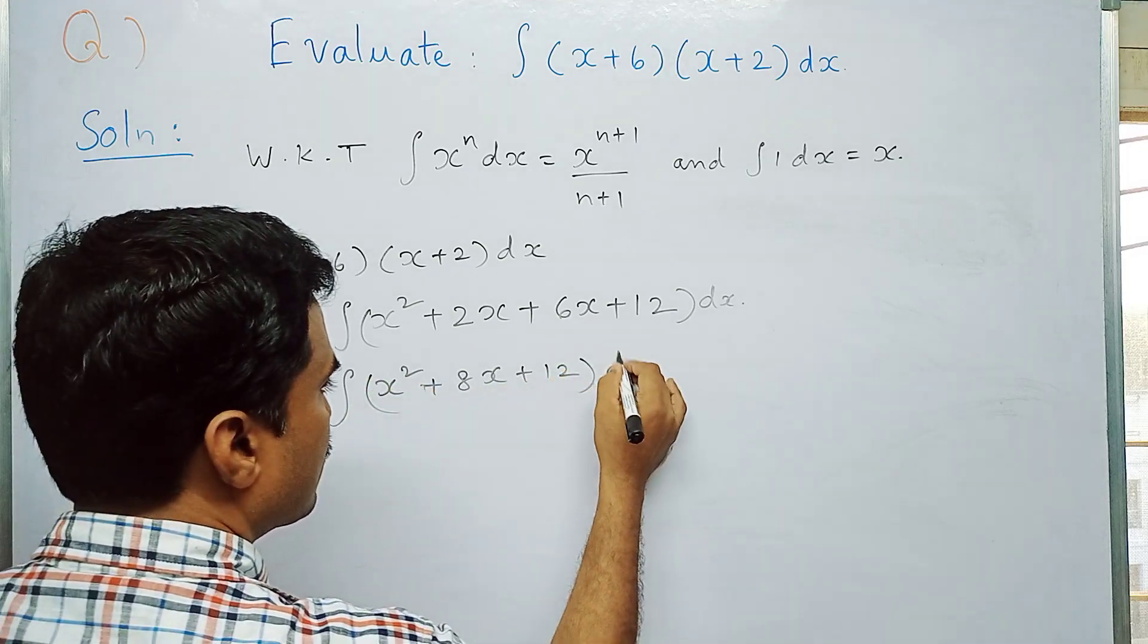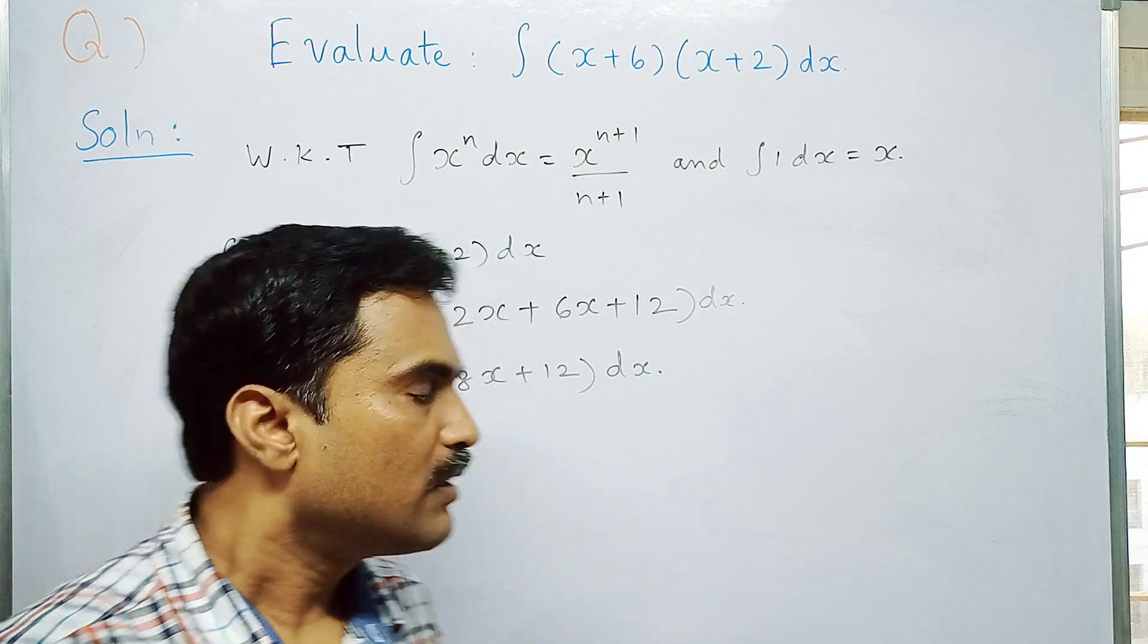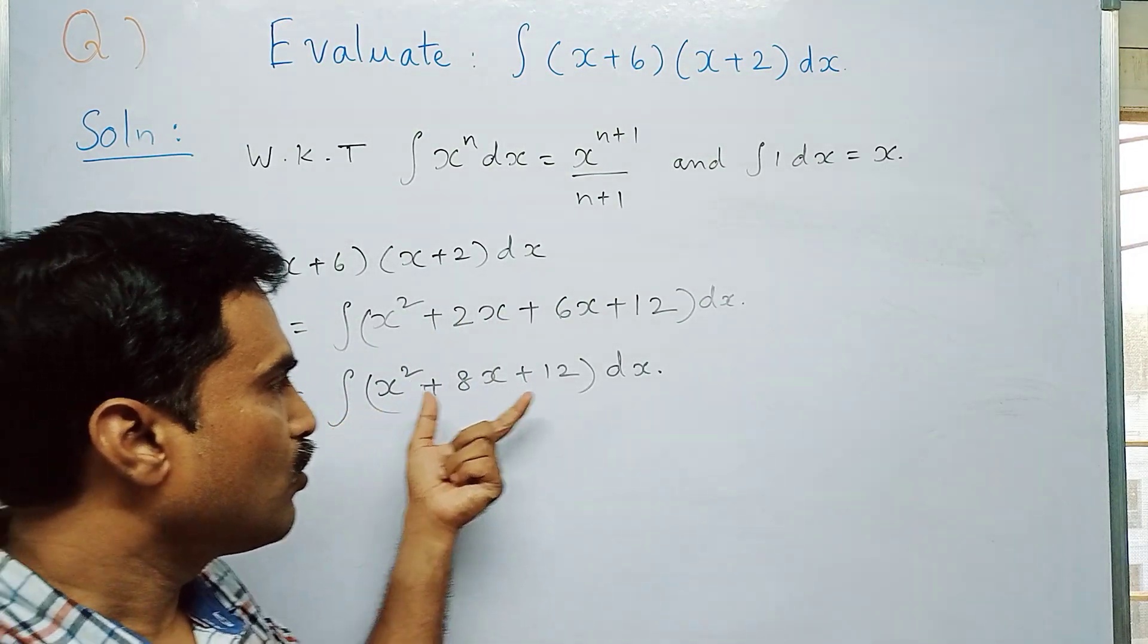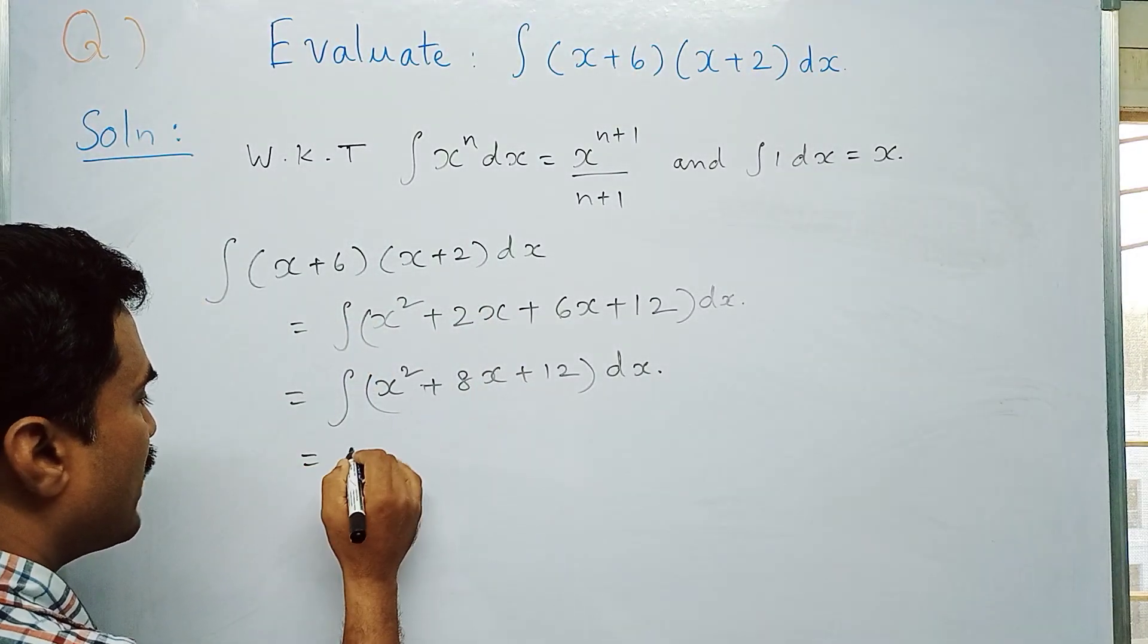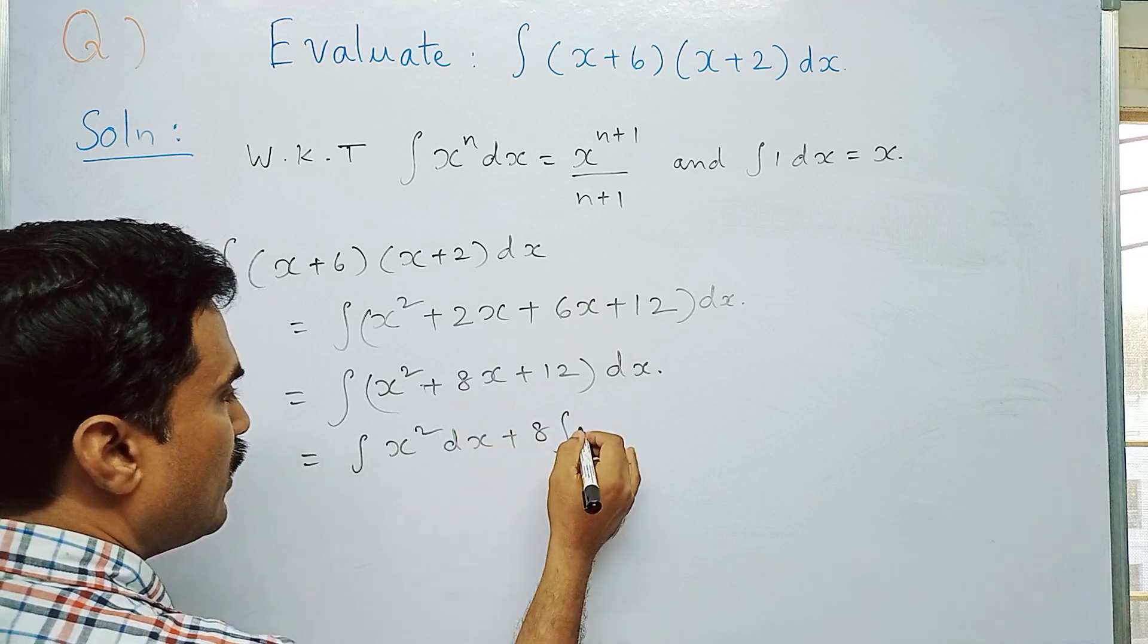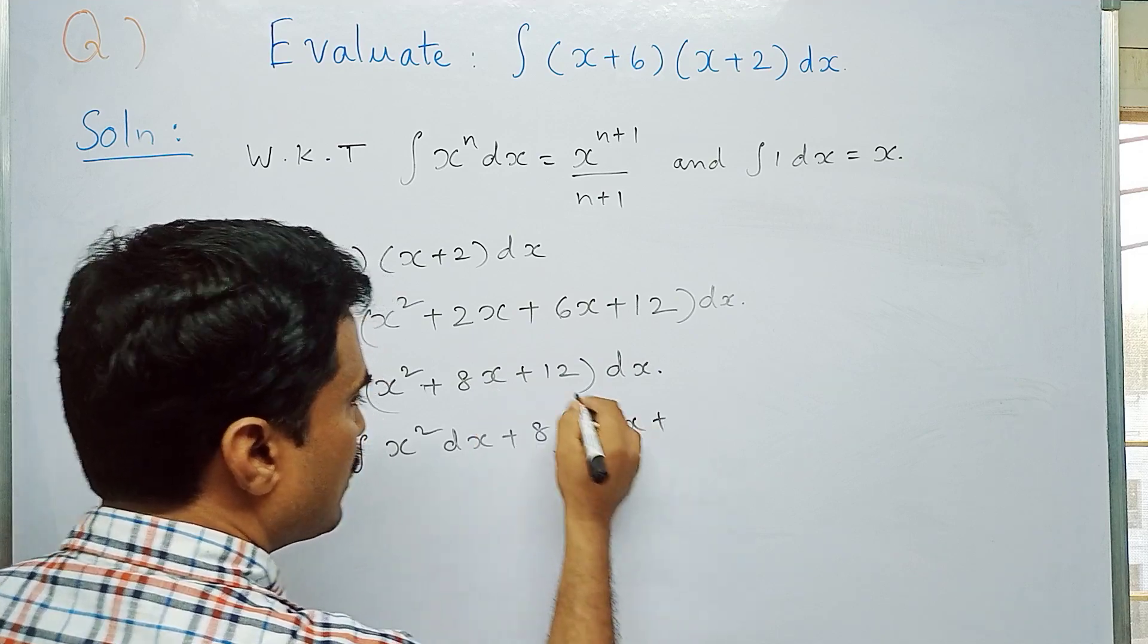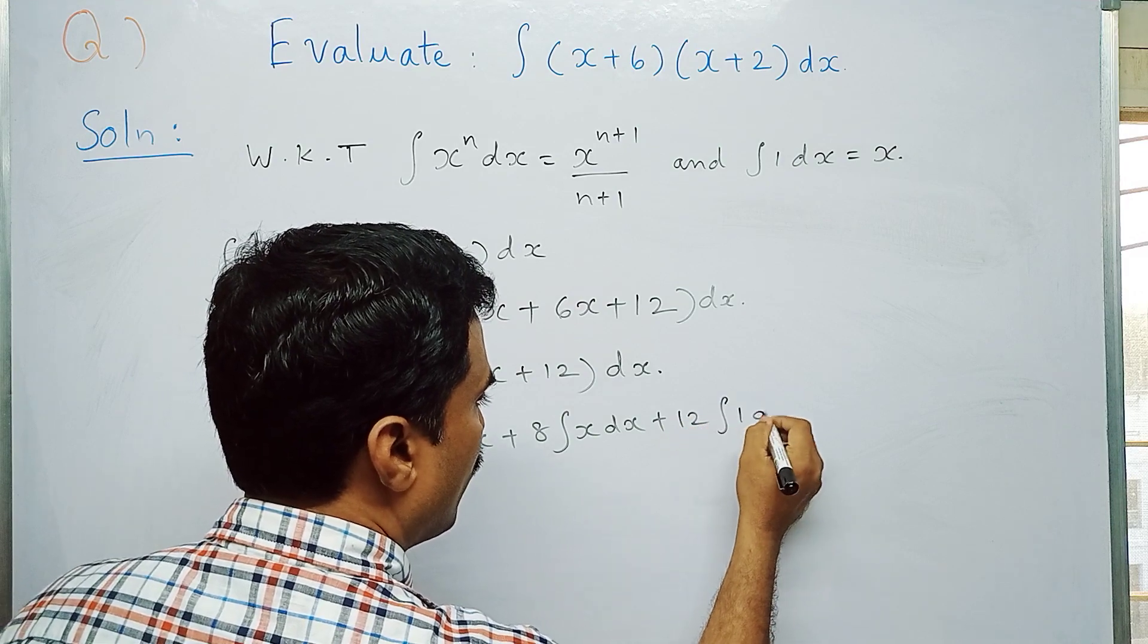Now apply the integration decomposition method. That means you have to apply this integral operator to all three terms. Take the integral inside: integral x² dx plus 8 is a constant so take it out, then x dx, plus last one is constant 12, integral 1 dx.